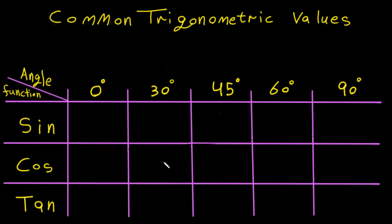Hi guys, let me tell you a simple trick about trigonometric functions. We have sine, cosine, and tan — the common trigonometric values for angles 0, 30, 45, 60, and 90 degrees. Here is the simple way to do it.